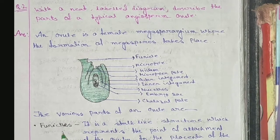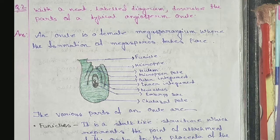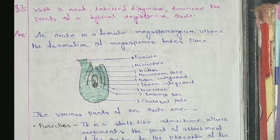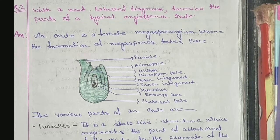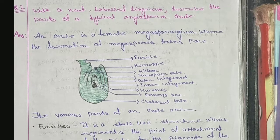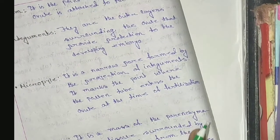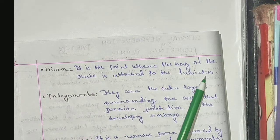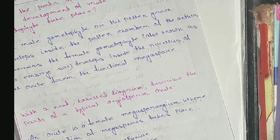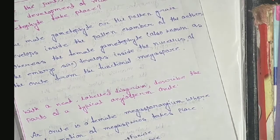The various parts of an ovule are: the funicle — it is a stalk-like structure which represents the point of attachment of the ovule to the placenta of the ovary, so through the funicle the ovule is attached to the placenta. The hilum is the point where the body of the ovule is attached to the funicle.